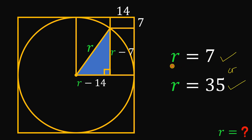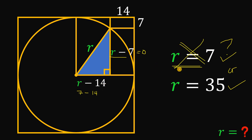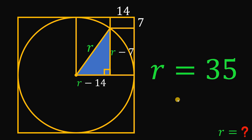Which value is correct? If r equals 7, then r minus 7 equals 0, giving a rectangle with a side length of 0 — impossible. Also, r minus 14 would be negative 7, a negative side length — also impossible. Therefore, the only valid answer is r equals 35 units. That is the length of the radius r.